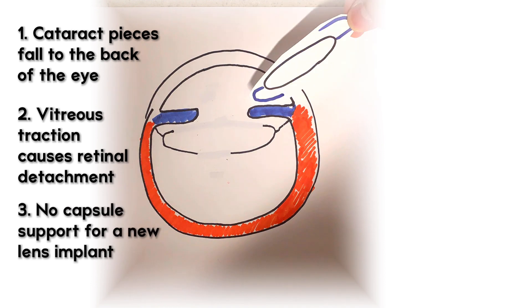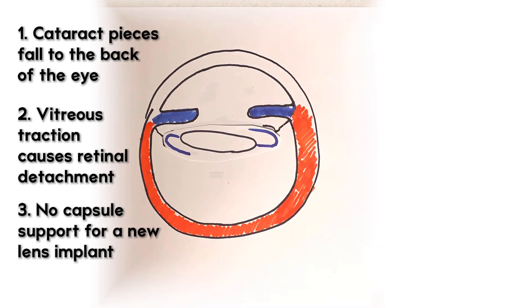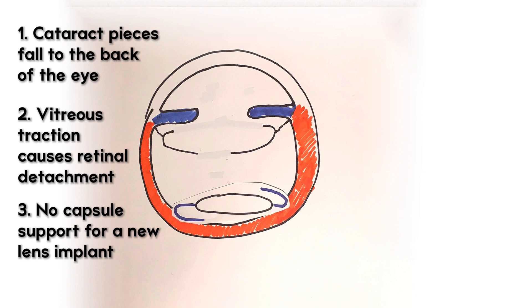And finally three, once the capsule is broken there's compromised structural support and a new lens implant can easily dislocate and fall to the back of the eye.